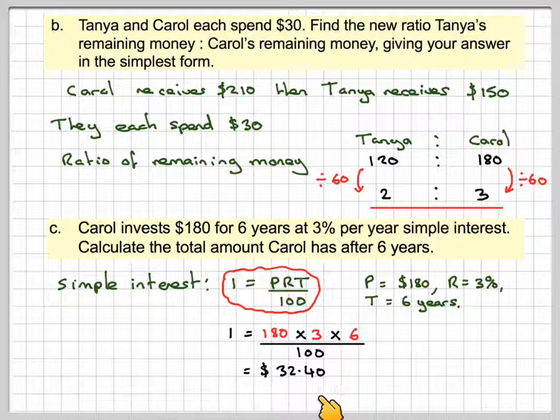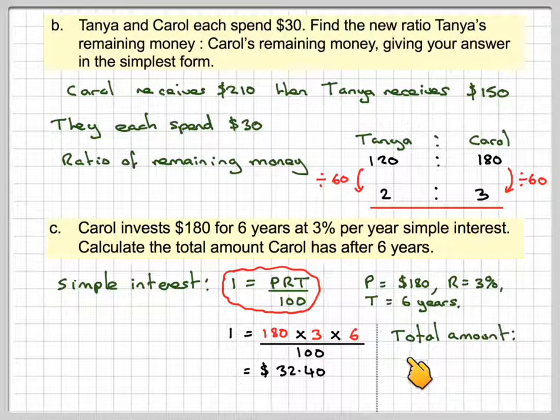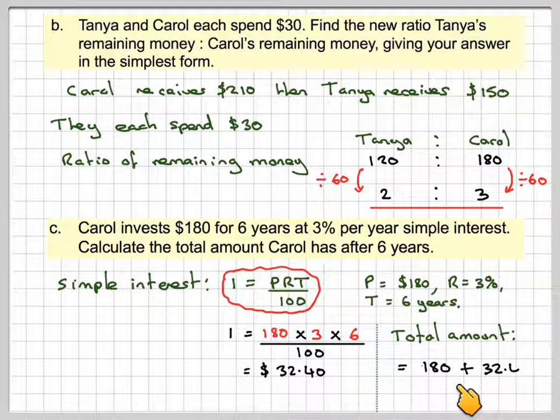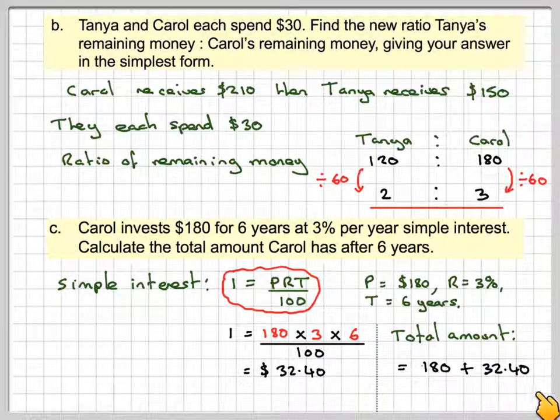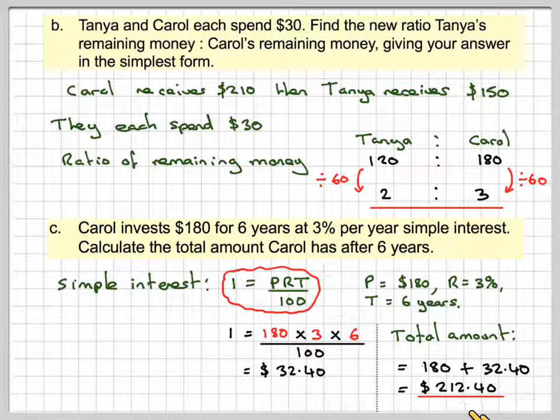We want the total amount. So the total amount will be the original amount, which is 180, plus the interest, which is 32.40, which is going to give me $212.40.